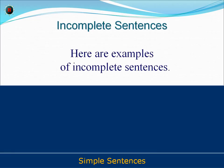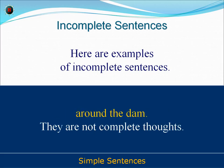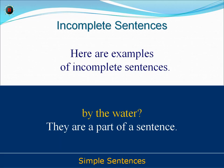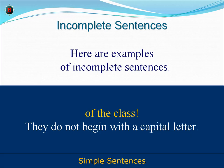Here are examples of incomplete sentences. Say why these groups of words are incomplete sentences: around the dam, by the water, in the room, of the class, down the valley.